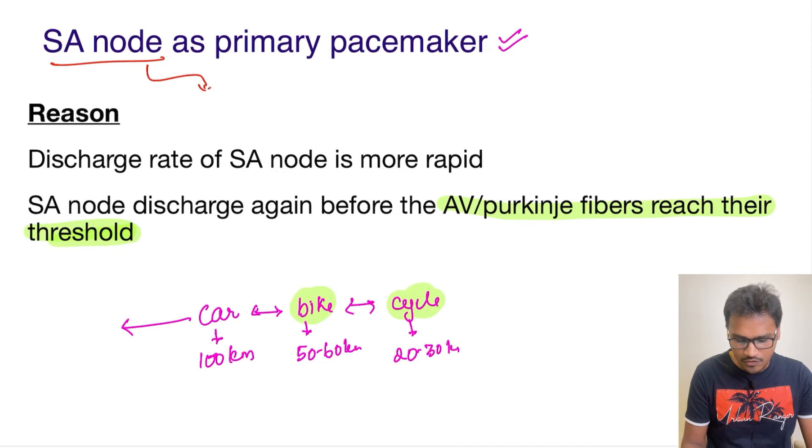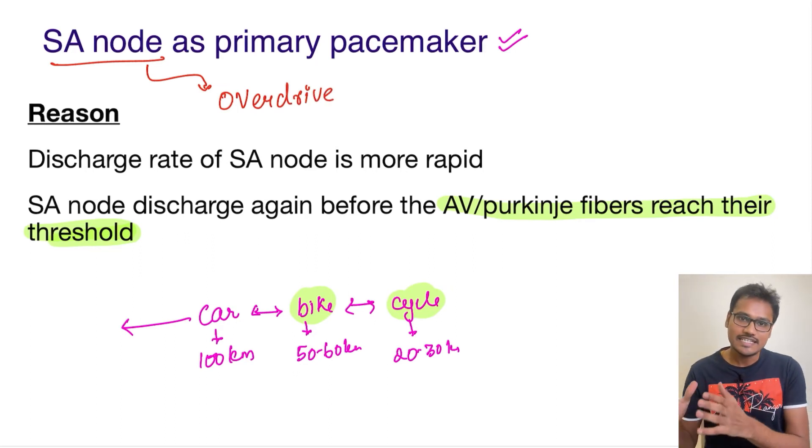The SA node has the property of overdrive suppression. So it is going to overdrive and suppress other pacemakers till it is intact.